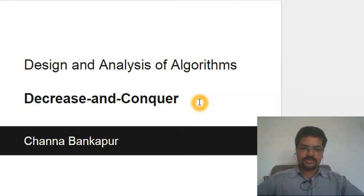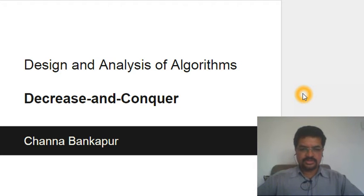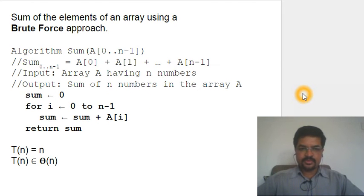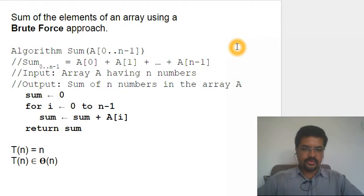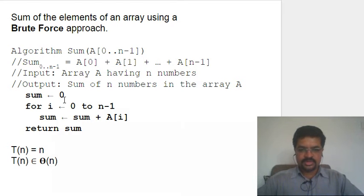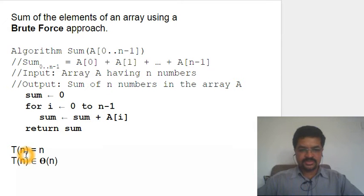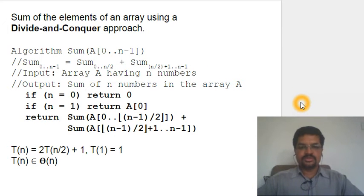In this video I'm going to introduce decrease and conquer — a design technique. Before defining it, let's go with an example: finding the sum of elements of an array. The brute force approach is straightforward — sum of n elements means adding each element separately in a loop iteratively. We are doing n additions here, so the time efficiency of this method belongs to Θ(n).